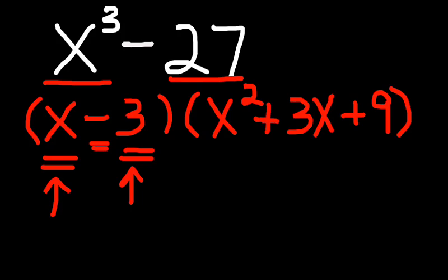So, the only things different would have been the signs that would have changed in the first factor from plus to minus to match this sign. And then always use the opposite sign here. This would have become plus instead of minus. And this would have been the factors for x cubed minus 27.